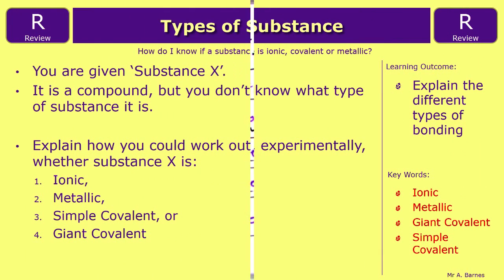The review question: you are given substance X, it's a compound but you don't know what type of substance it is. Explain how you can work out experimentally whether the substance is ionic, metallic, simple covalent or giant covalent. Think through the properties of all the different bonding types covered today and consider how you could prove each one experimentally. That ends this video — thank you.